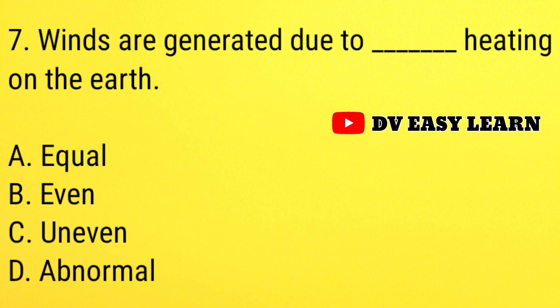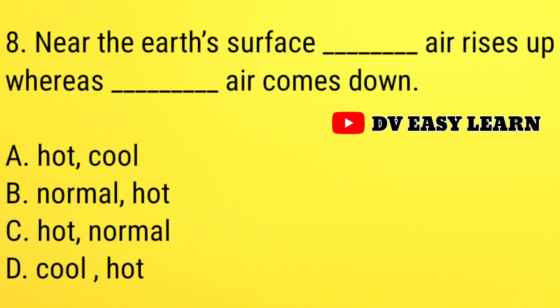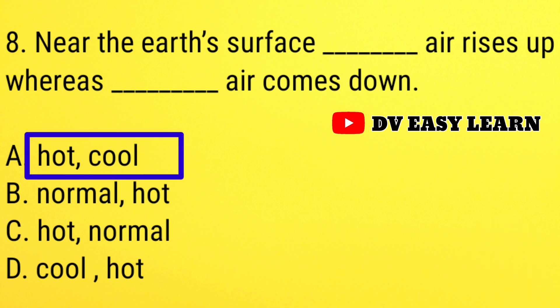Question number 7: winds are generated due to dash heating on the earth. Question number 8: near the earth's surface, dash air rises up, whereas dash air comes down. Correct answer: hot and cool.